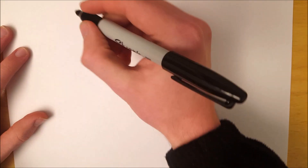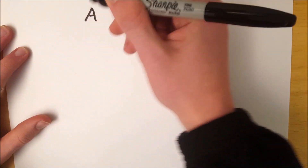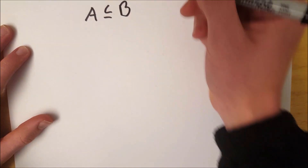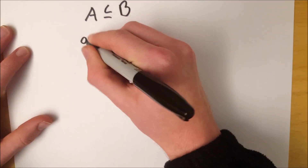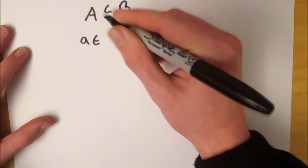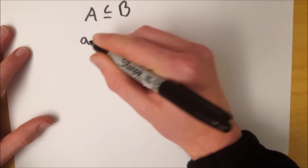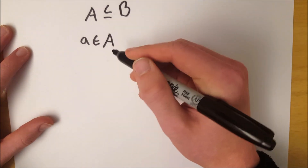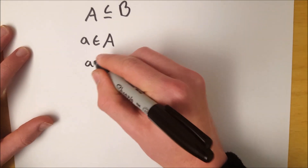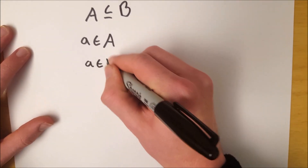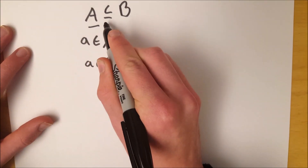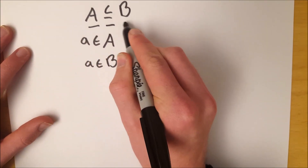In order for some generic set A to be a subset of B, for every element — we'll call it little a — just any generic element in the set A, every little a that's an element of set A must also be an element of B. If this is true, then A is a subset of B.